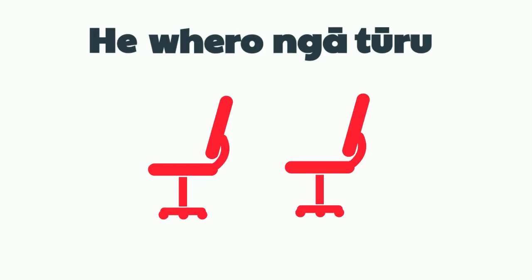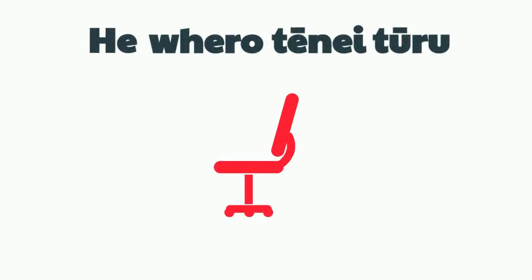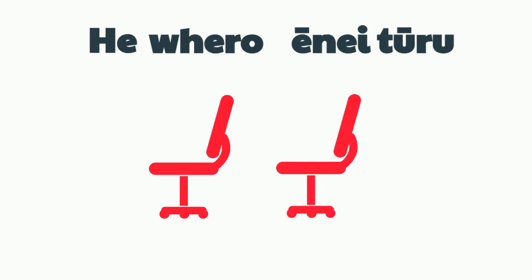The rest of the sentence does not change. To describe a more specific chair, we can use tēnei, which means this. He whero tēnei tūru — this chair is red. To describe more than one chair, we drop the t from tēnei: ēnei. He whero ēnei tūru — these chairs are red.